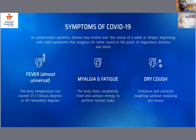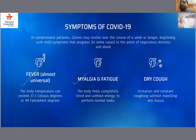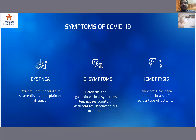Coming to the symptoms of COVID-19, in symptomatic patients, illness may evolve over the course of a week or longer, beginning with mild symptoms that progress to the point of respiratory distress and shock in some cases. Fever is almost universal in all patients, and body temperature can exceed 99 degrees Fahrenheit. The patient may complain of myalgia and fatigue, and also presents with irritation and constant dry coughing. In moderate and severe disease, patients complain of dyspnea. Headache and gastrointestinal symptoms like nausea, vomiting, and diarrhea are uncommon but may occur. In a very small percentage of cases, hemoptysis was also noted.